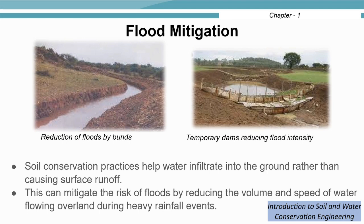Soil conservation measures can help in mitigating the effect of floods. They promote infiltration and reduce the velocity of overland flow. Bunds have been constructed and a temporary dam has been constructed on a gully, helping reduce the intensity of flooding. This can drastically reduce the volume and speed of water flowing overland during heavy rainfall events, providing relief from floods.